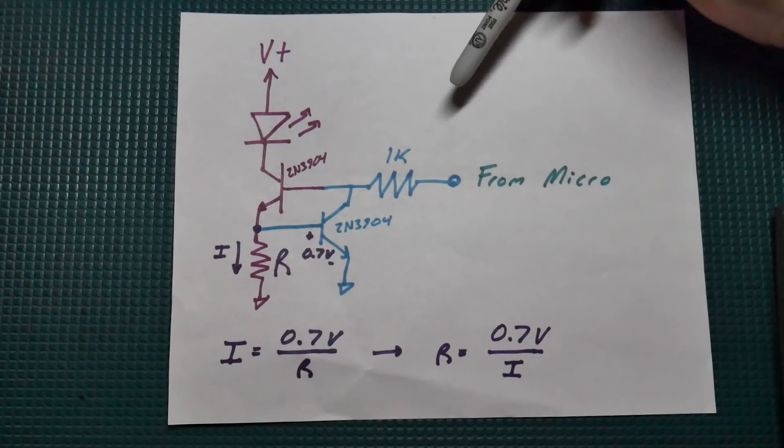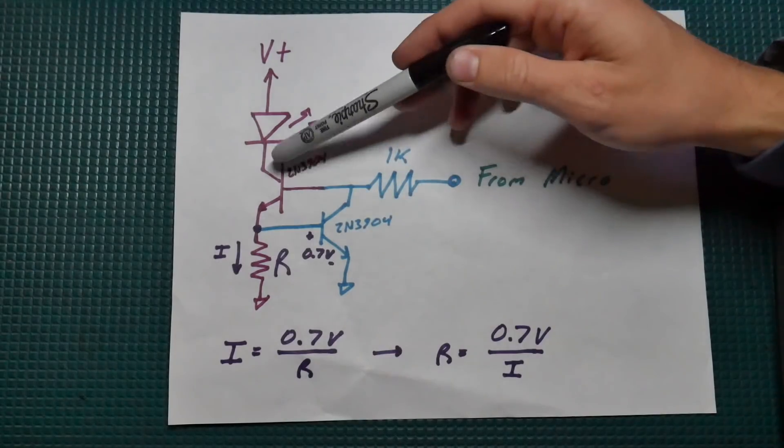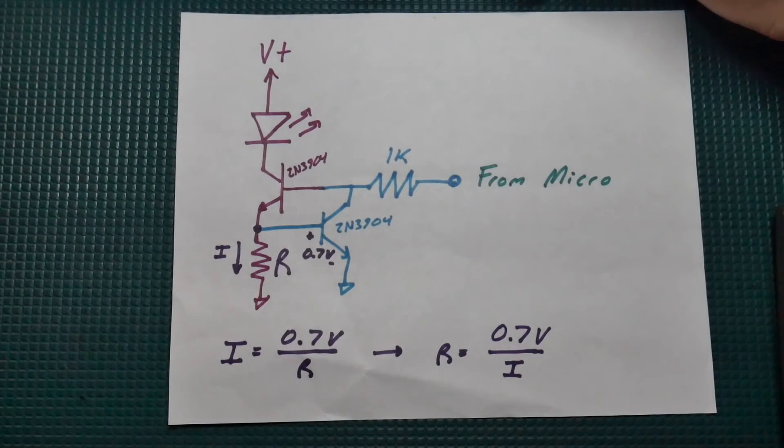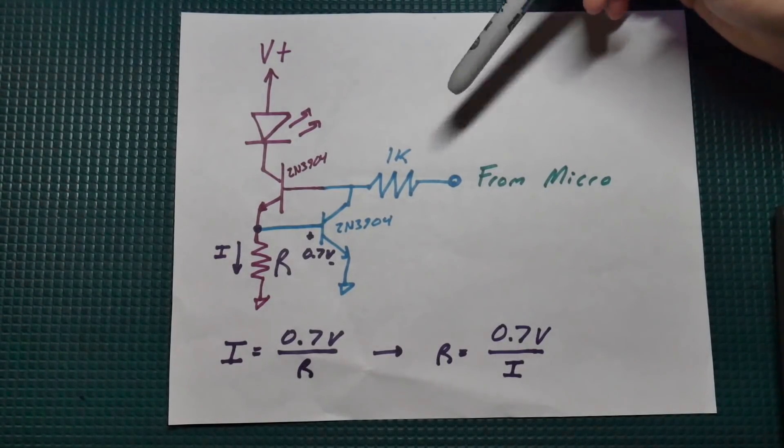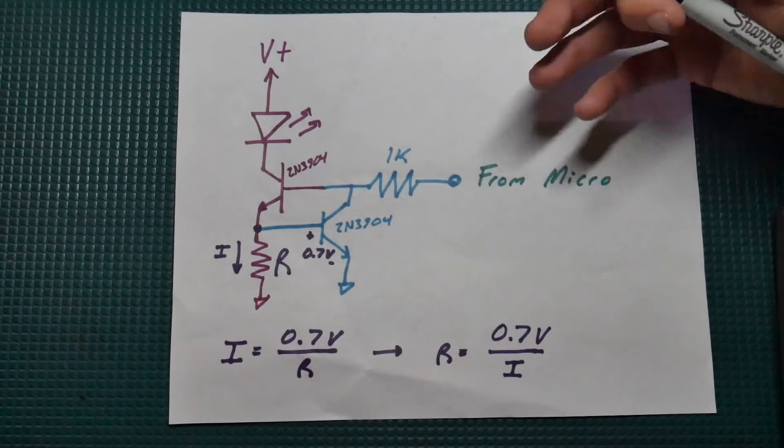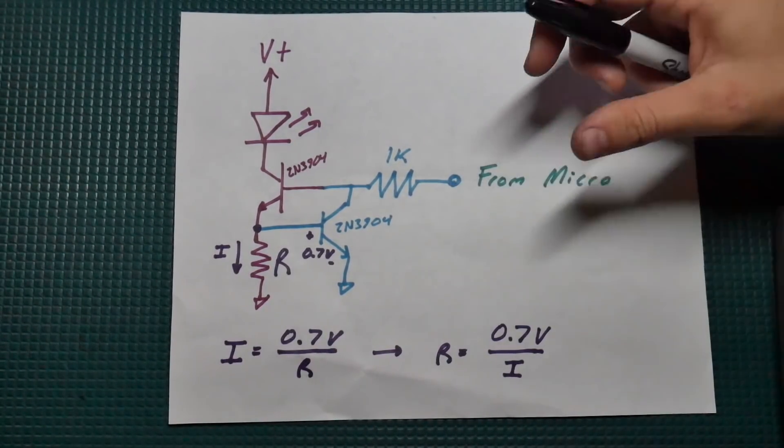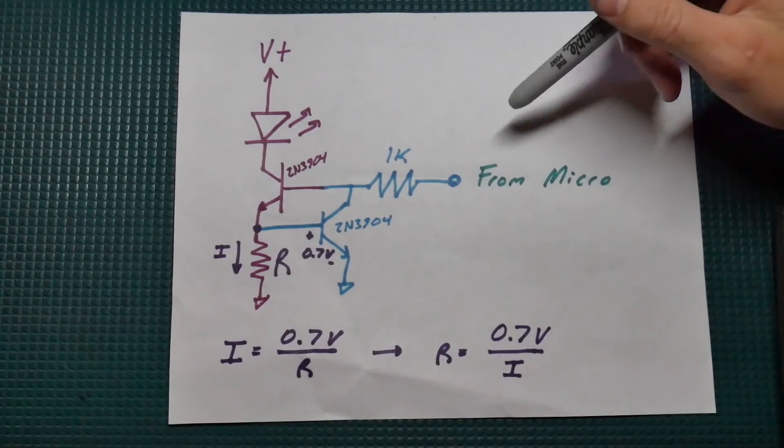Alright, so here's the circuit. And like I said, it is very simple. We've got the two transistors here. Those are 2N3904 NPN transistors. But whatever you've got lying around should work as well. In fact, I actually recommend you go and build this up because it is such a cool, easy circuit.